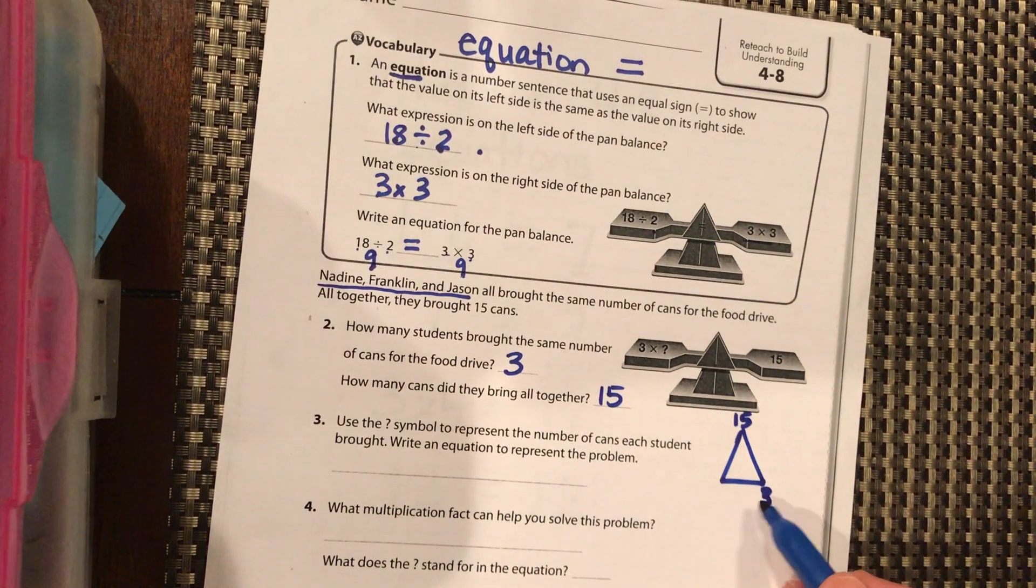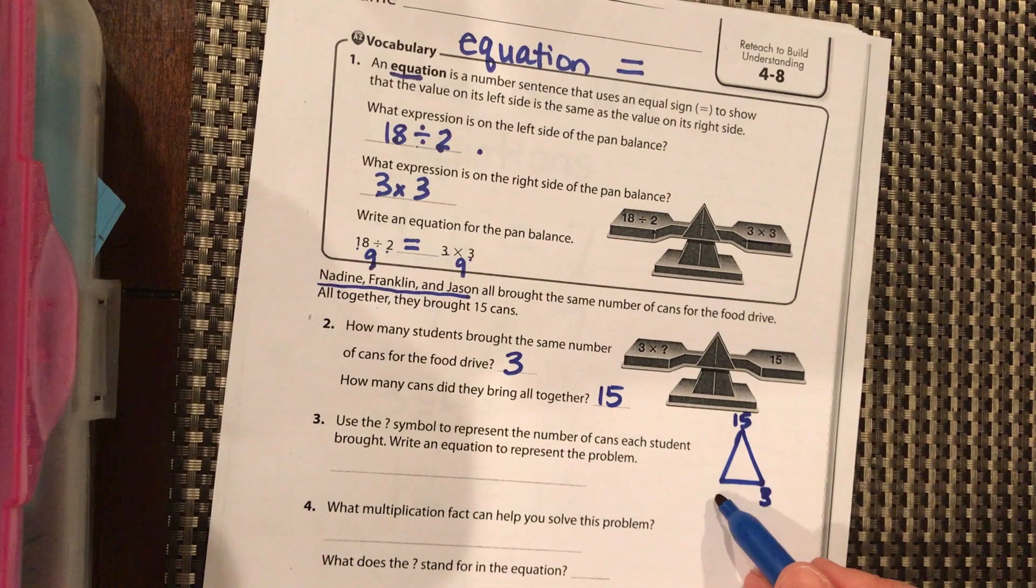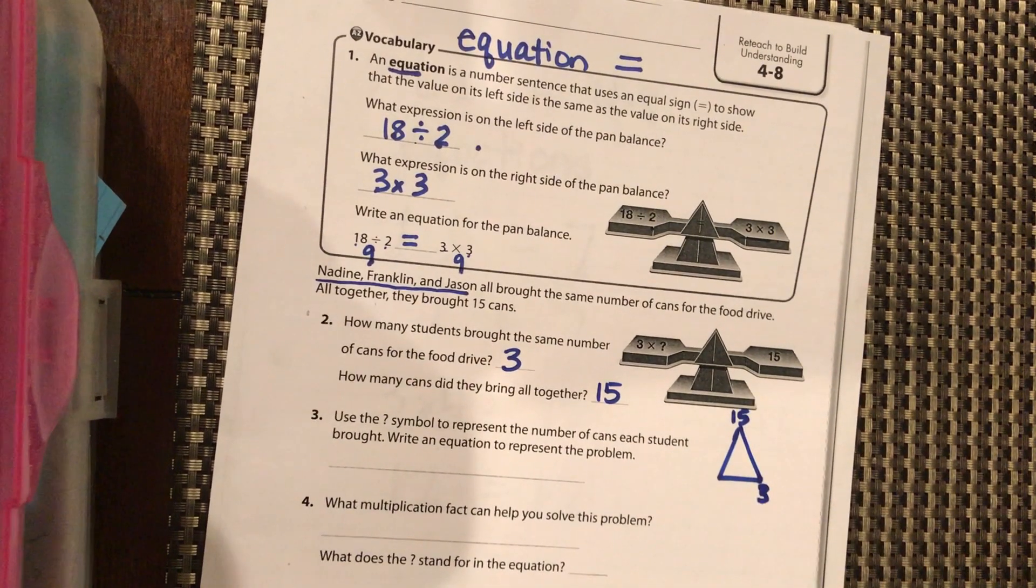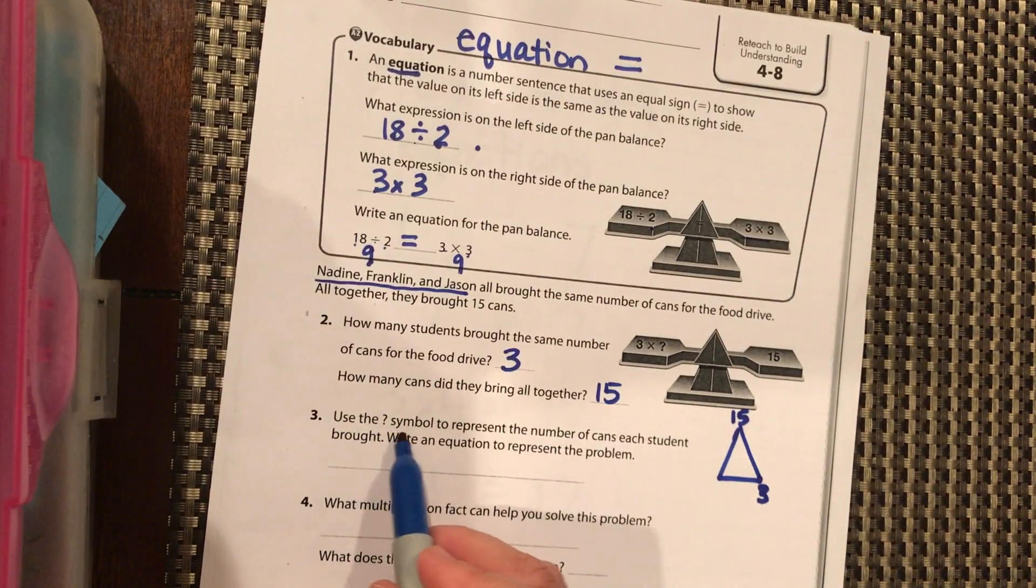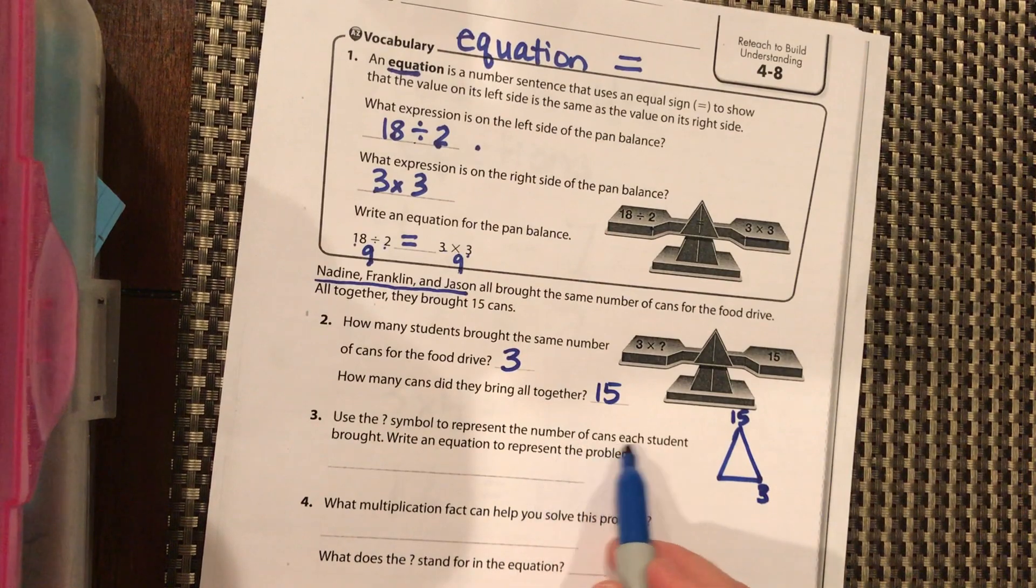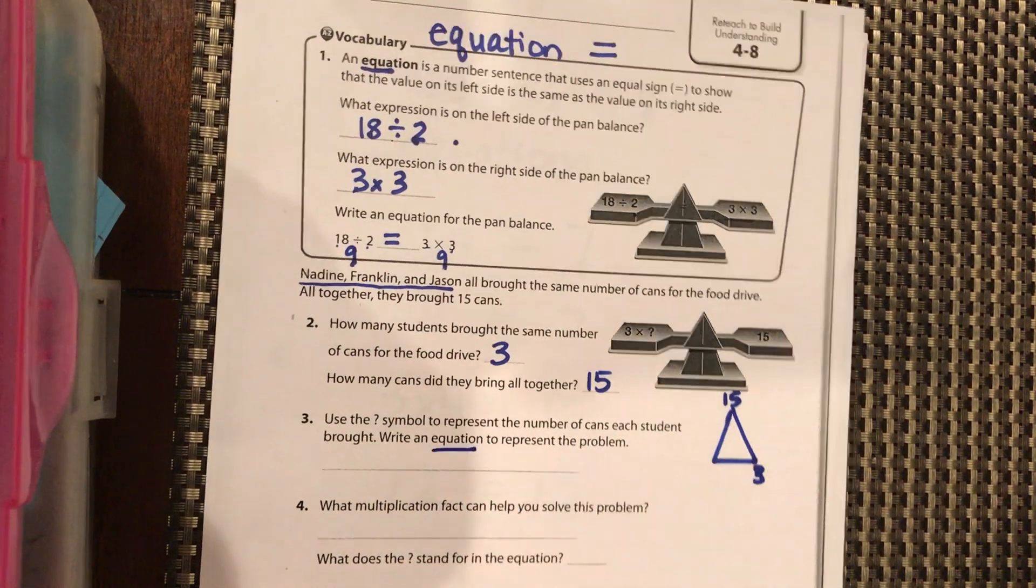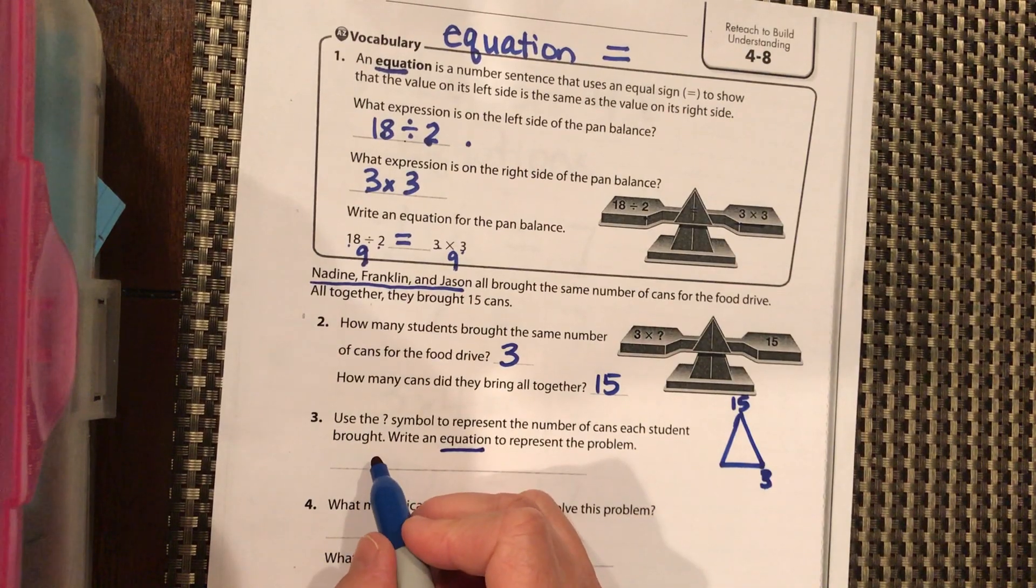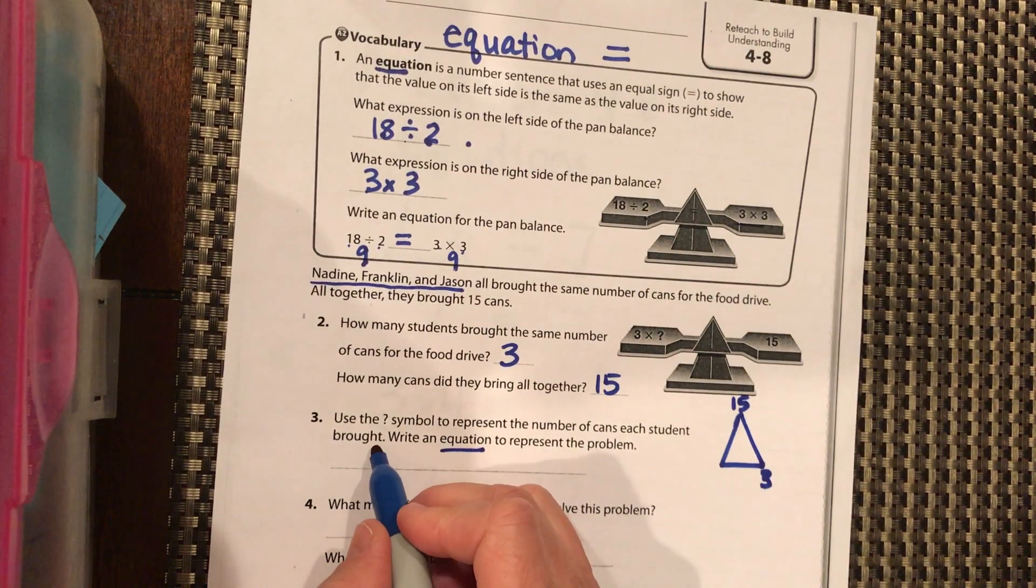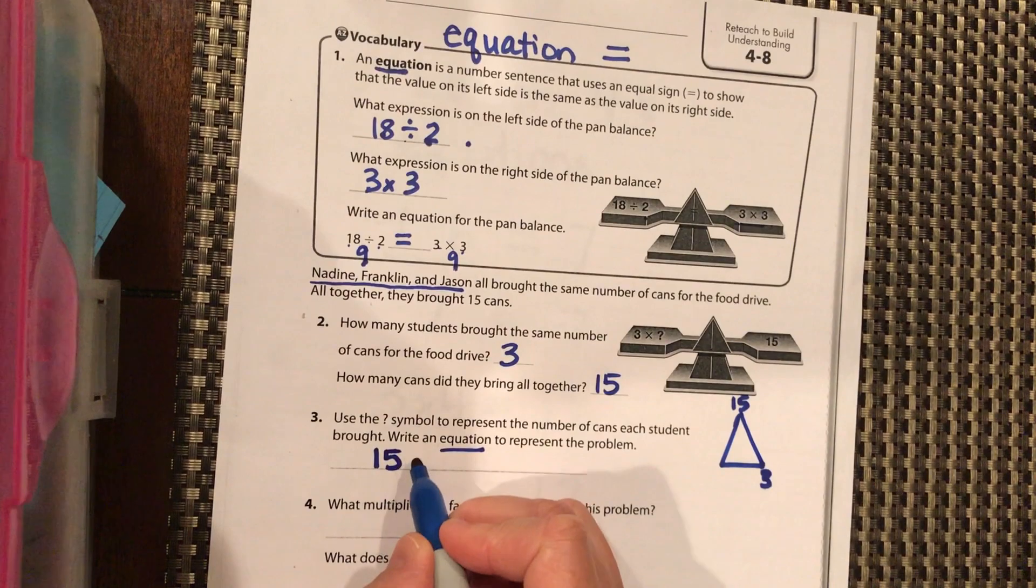How many cans did they each bring to get 15? Use the question mark symbol to represent the total number of cans each student brought. So write an equation to represent the problem. So we know we have a total of 15.